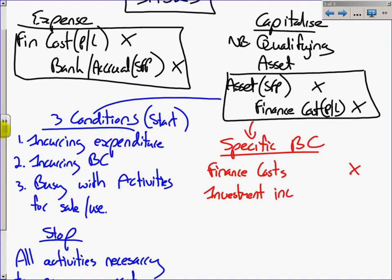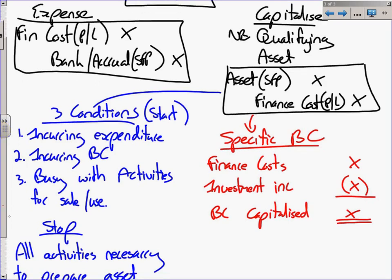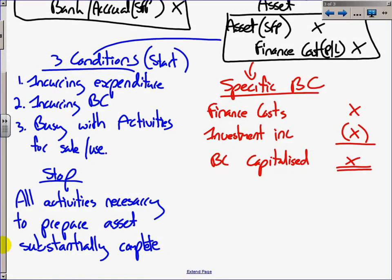The investment income that you take, you will just take off for calculation purposes. You won't actually pass a journal. And then you will get the borrowing costs that can be capitalized. You will do that for specific borrowings, and you'll do specific borrowings first.